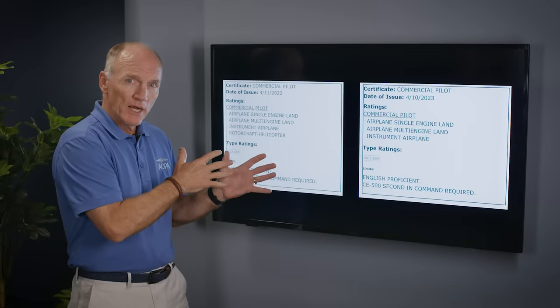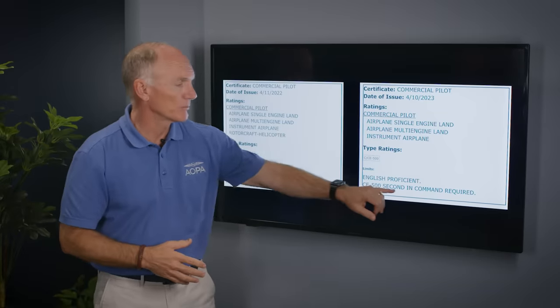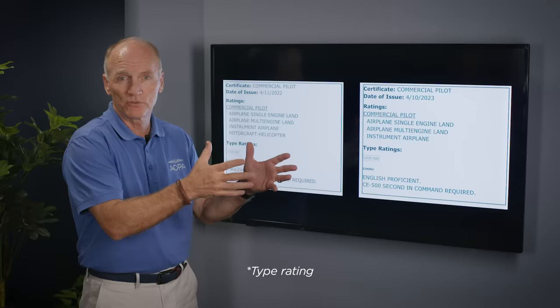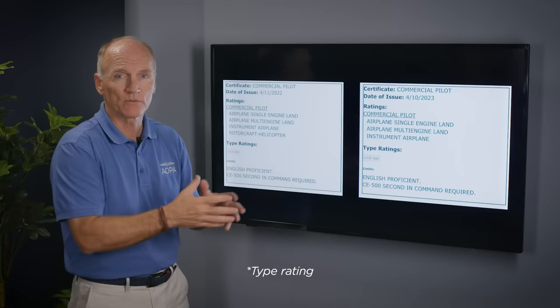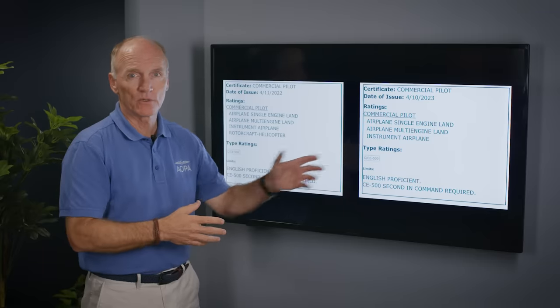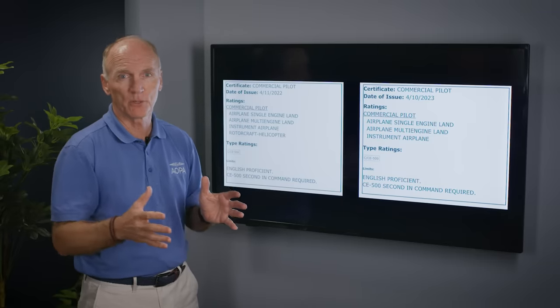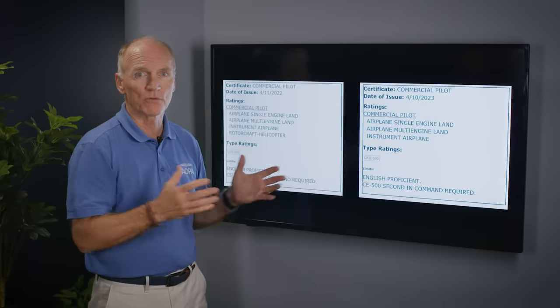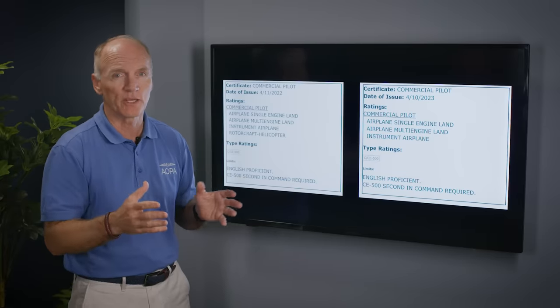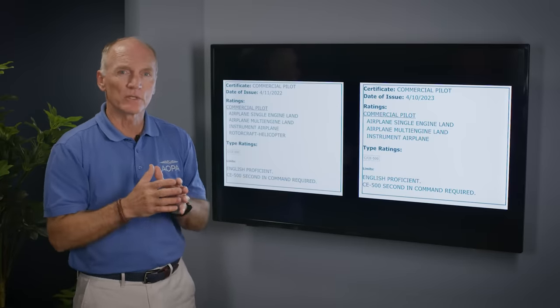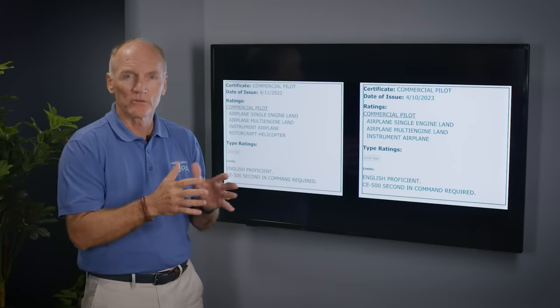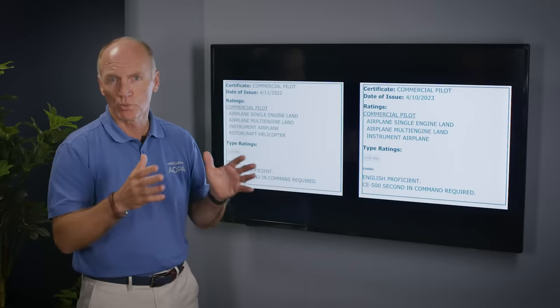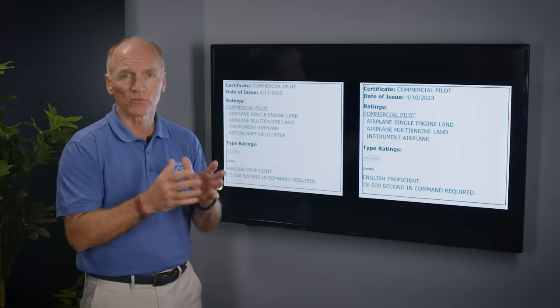So two pilots, and look at the limitation down here for both of them, second in command required. That's typically given when you get your first PIC clearance or rating in an aircraft. So that could indicate that neither of the pilots had a great deal of experience in the airplane or in this kind of operation. Could. The NTSB will be able to confirm just how much experience they had. But that experience level is important because what the pilots attempted, flying an approach to minimum weather or below minimum weather, is demanding flying and would require a high level of skill and proficiency.